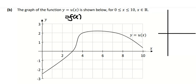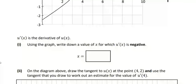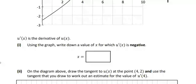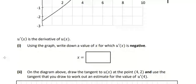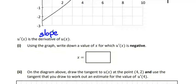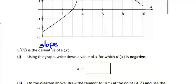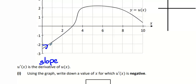Now let's look at the next part. u-dash is the derivative of u. Use the graph to write down the value. The first derivative is otherwise known as — who said slope? Raj has learned that the slope is the first derivative. So currently speaking, are you on your way up or your way down?